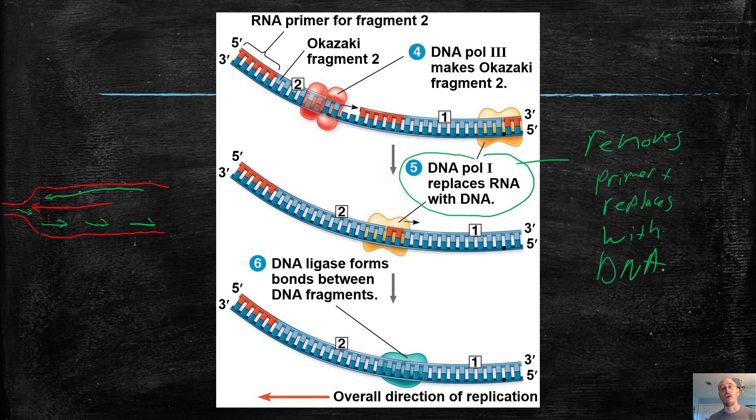Remember, the primer was made of RNA. So we get rid of that, we replace it with DNA. And the only issue is the very last piece of the backbone right here is still a gap. There's still a gap there. The enzyme doesn't have the right shape to cause the covalent bond to form in the backbone to glue those two things together.